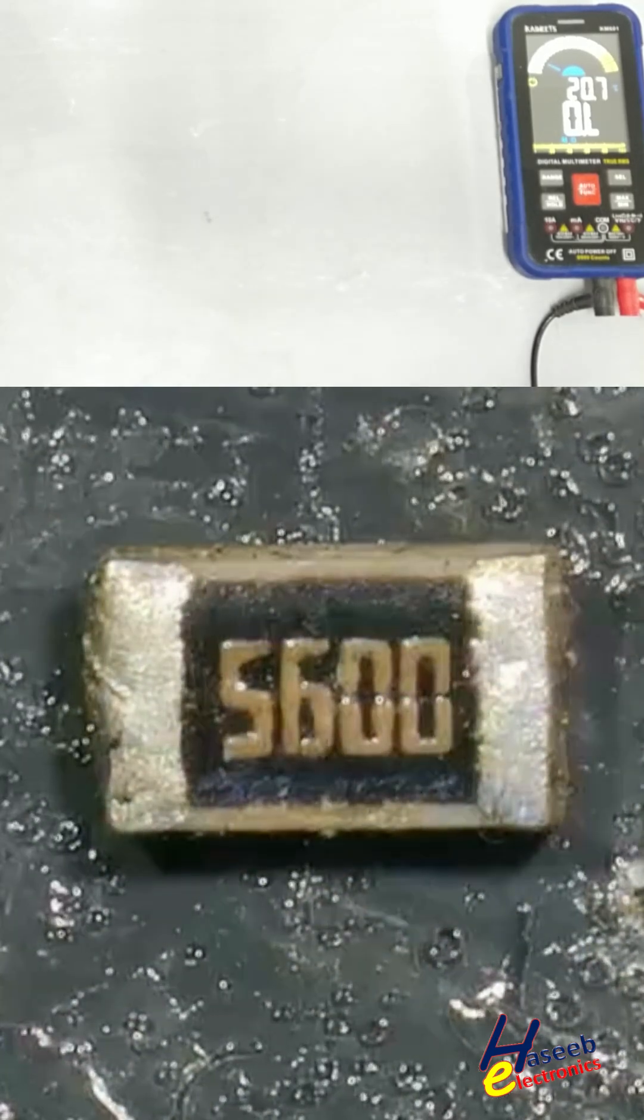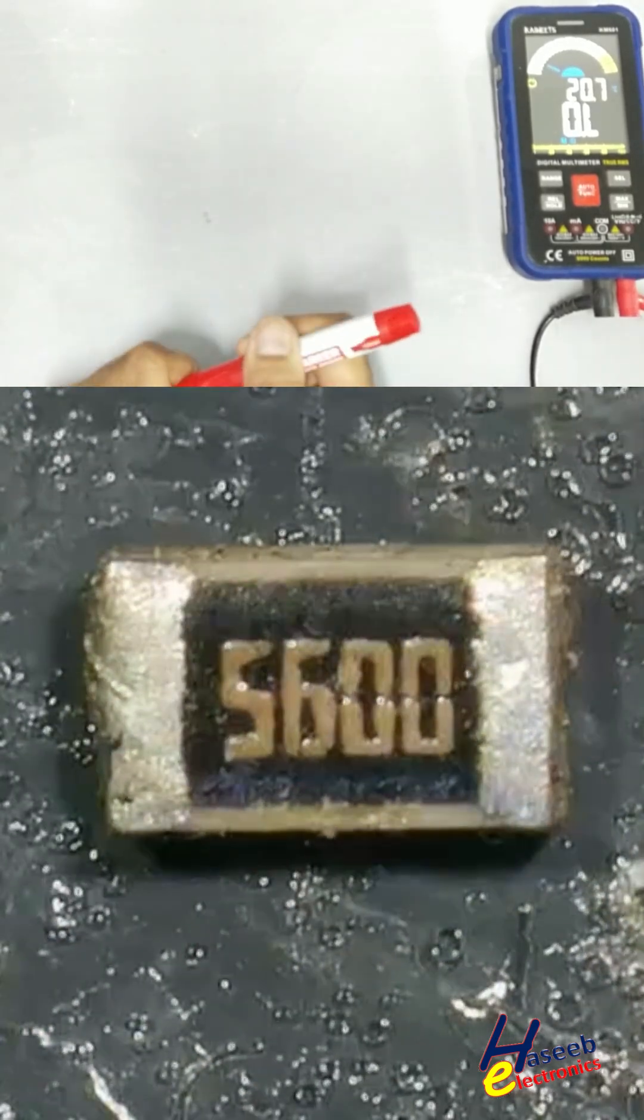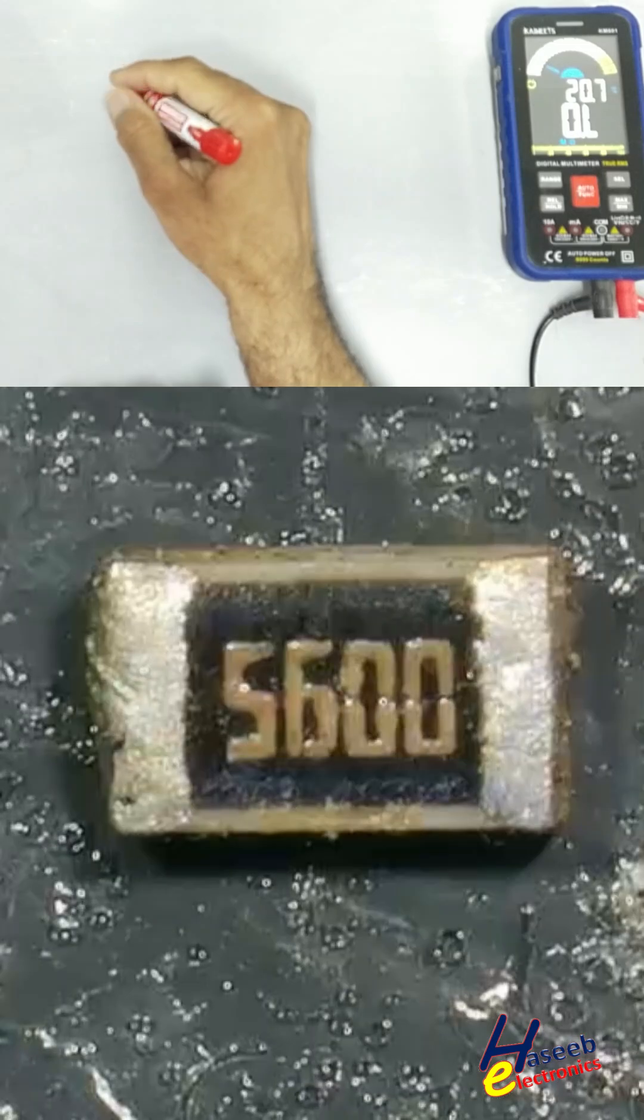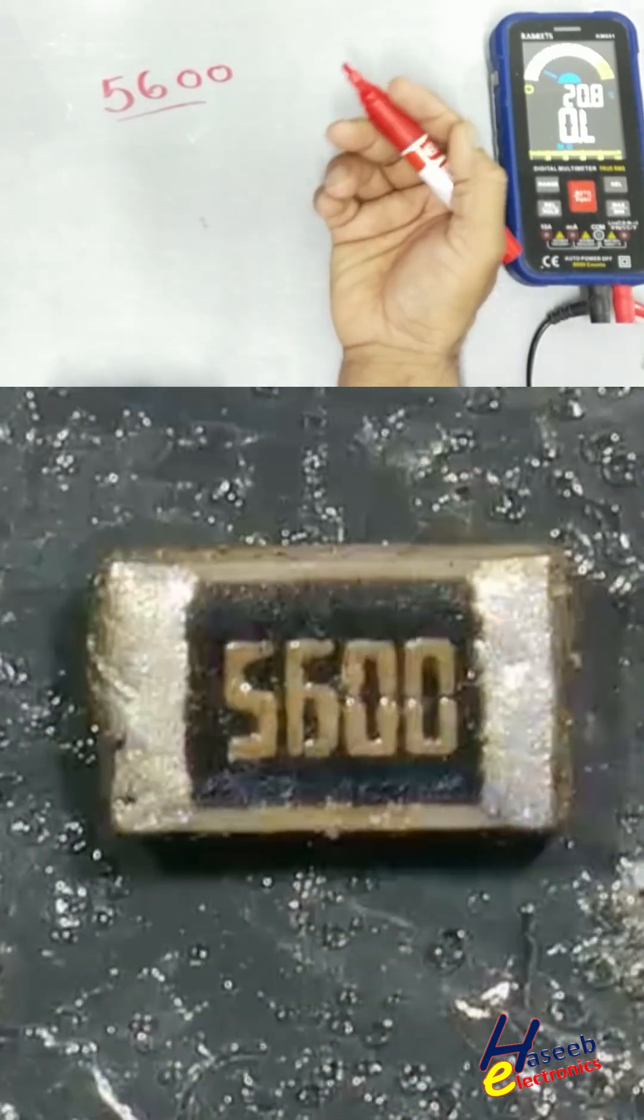Here is a 4-digit marking resistor. Its number is 5600. The first three numbers are significant numbers.